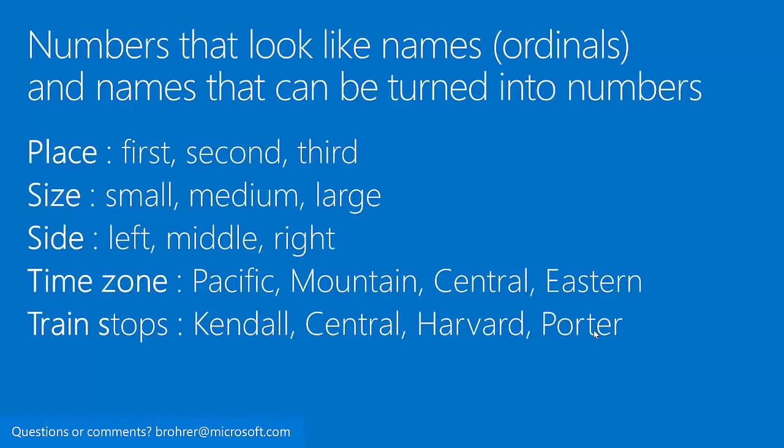And to further confuse the issue, there are numbers that look like names — ordinals, for instance — and names that can be turned into numbers. These are names that have a distinct order, like first, second, third. Small, medium, large — there's a distinct order, and a medium is about as much bigger than a small as a large is than a medium. Left, middle, right. Time zones, train stops — anything that has an order can be turned into a number and interpreted by a machine learning algorithm.